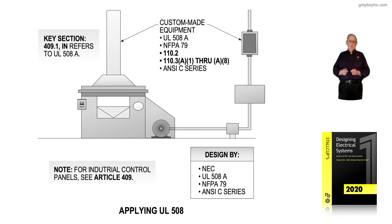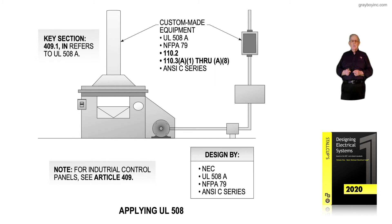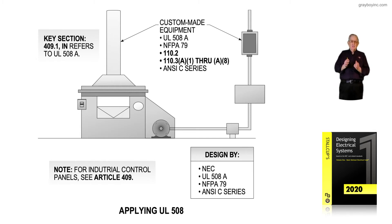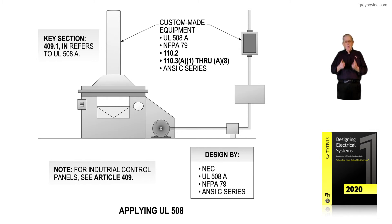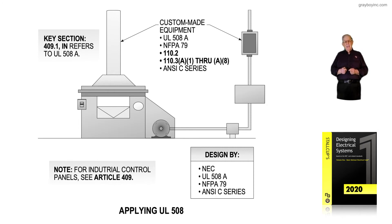Section 110.2 starts the approval of this custom-made equipment or UL 508. Section 110.3 A1 through A8 deals with checks that have to be made and rules and requirements that have to be adhered to. The NCC series standard for a particular piece of equipment may also have to be used in conjunction with the above.